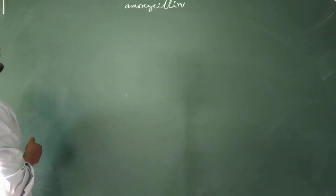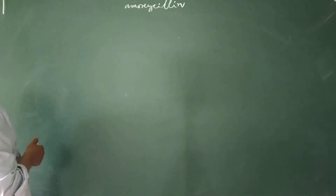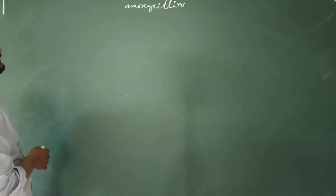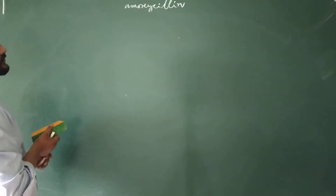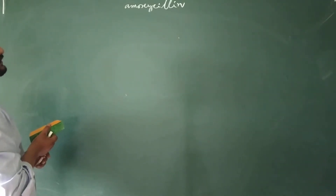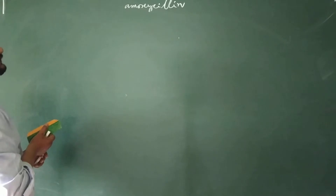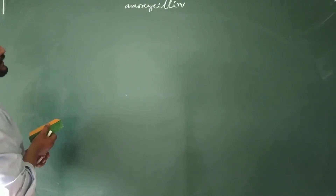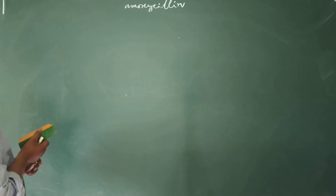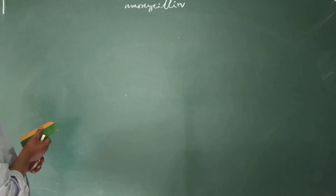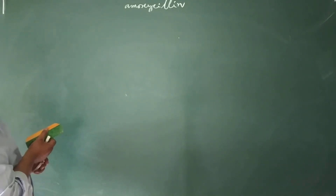Amoxicillin is a group of drugs of penicillin. Amoxicillin is an antibiotic drug. It is used for bacterial infections — amoxicillin is used for pneumonia, stomach pain, skin diseases, and throat infections.